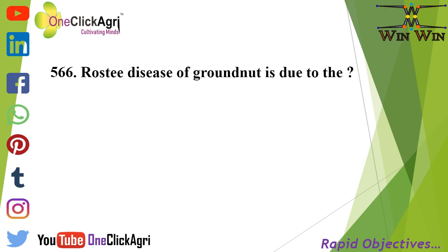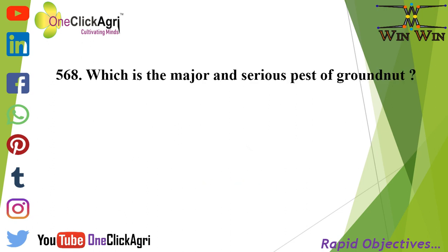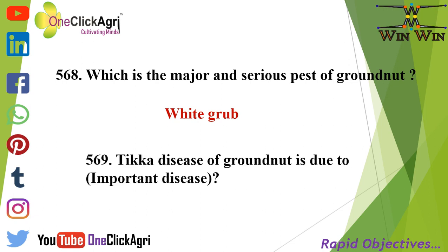Rosette disease of groundnut is caused by a virus. The rosette virus of groundnut is transmitted by aphids. Which is the major and serious pest of groundnut? White grub. Tika disease of groundnut is caused by a fungus.